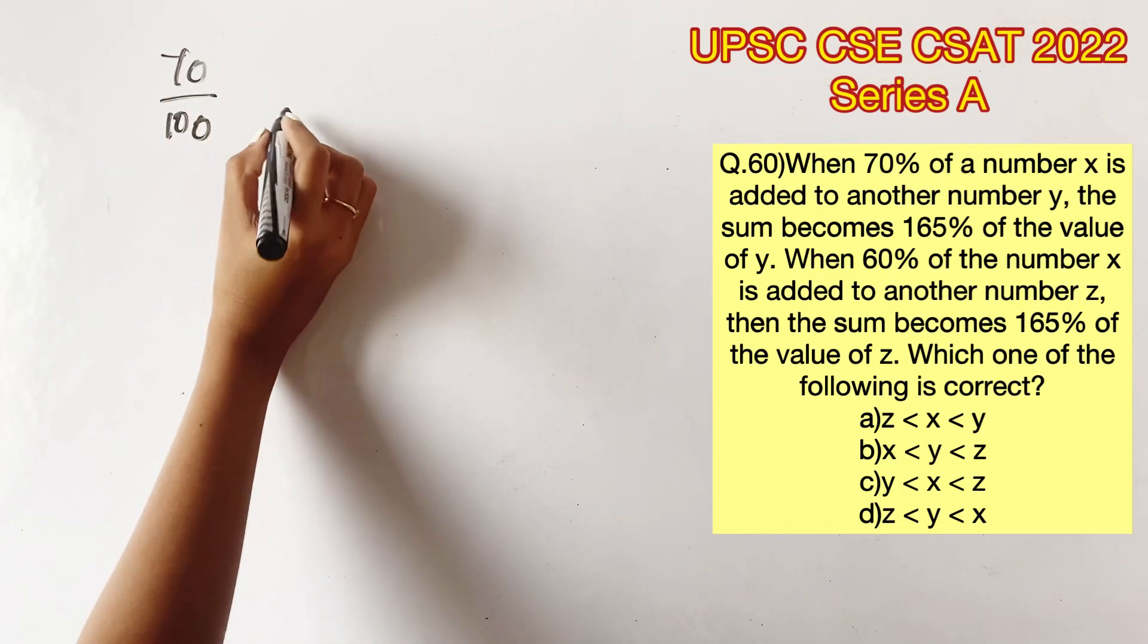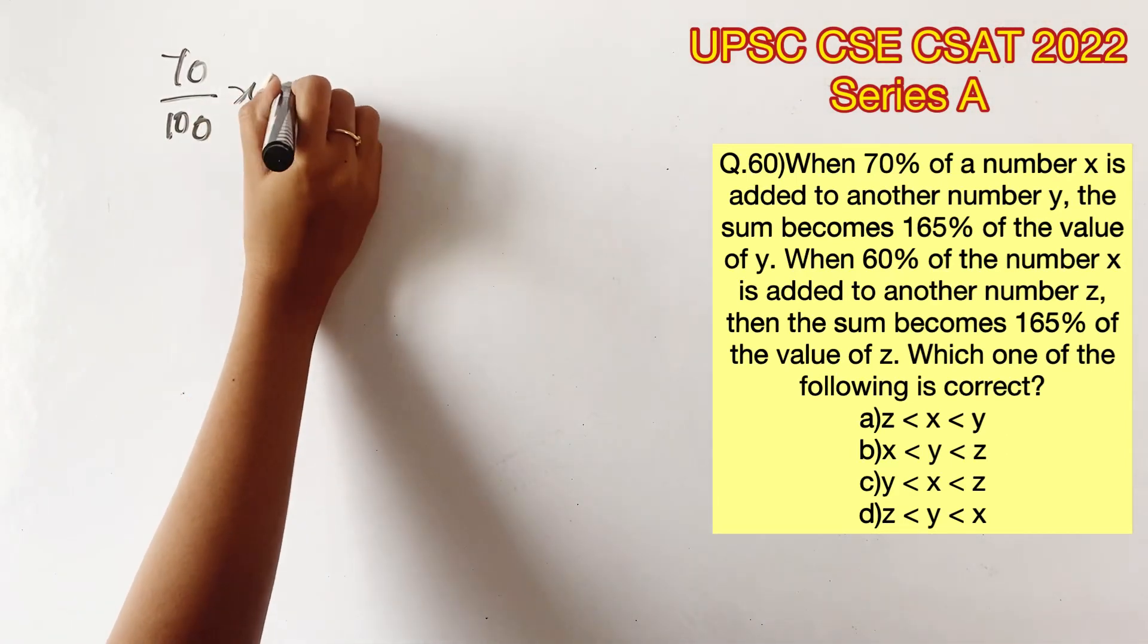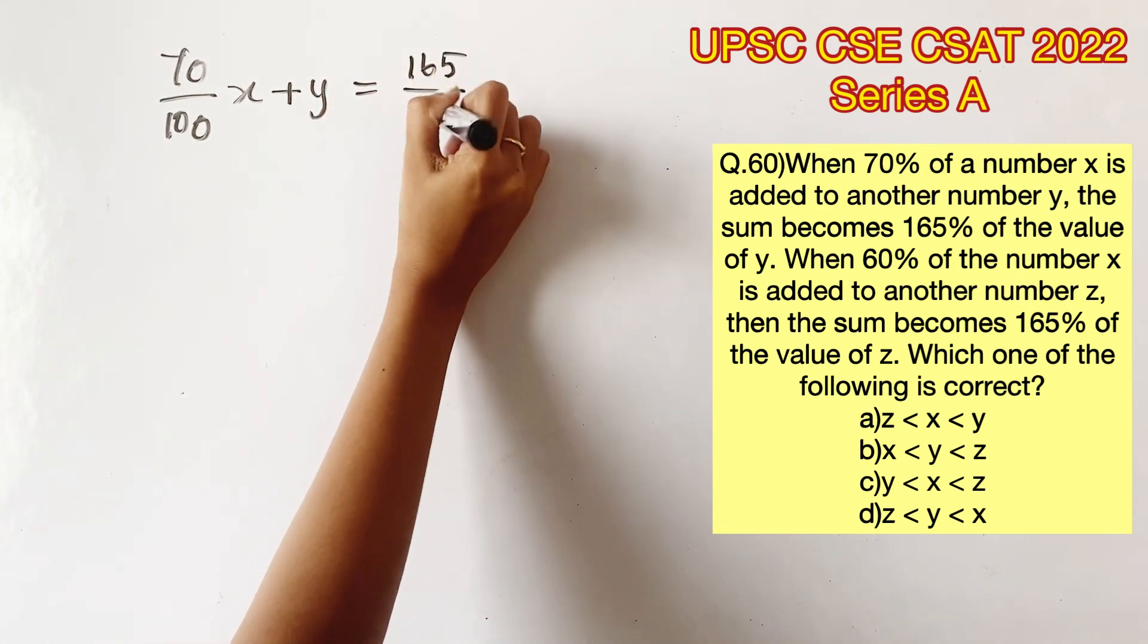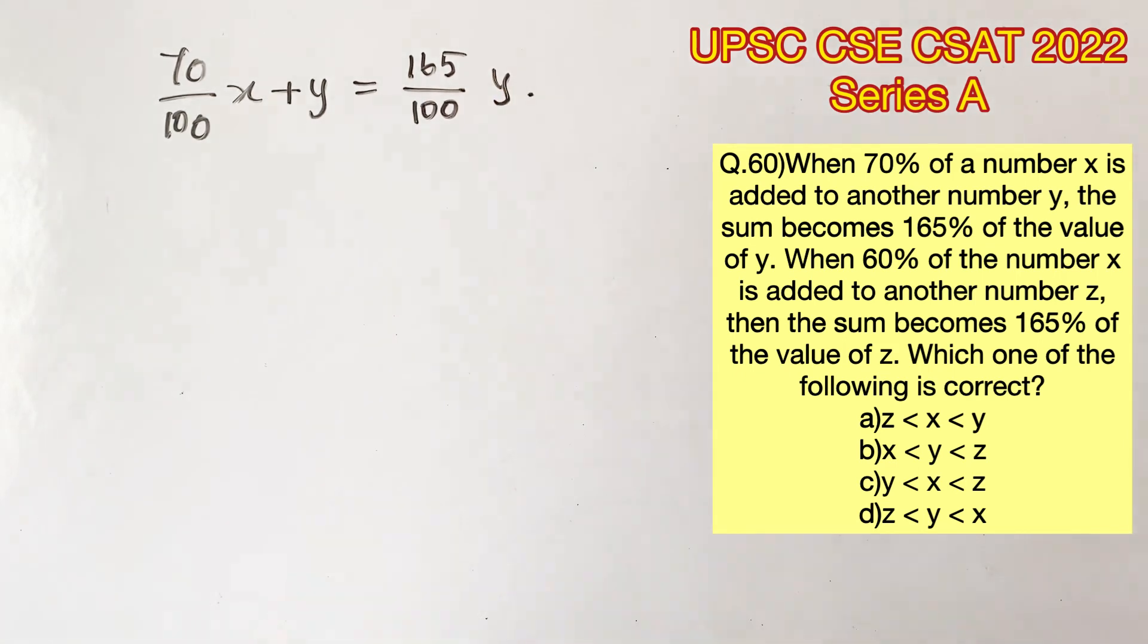When 70% of a number x is added to another number y, the sum becomes 165% of the value of y. So we can represent this in the form of equation as such.